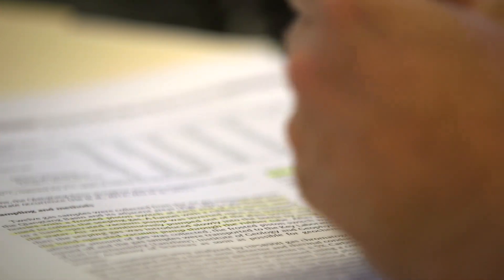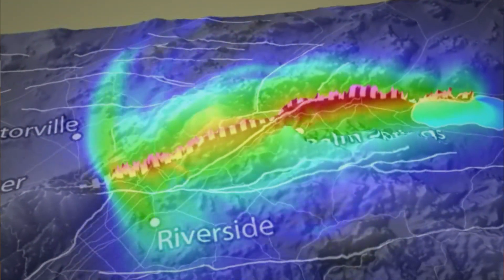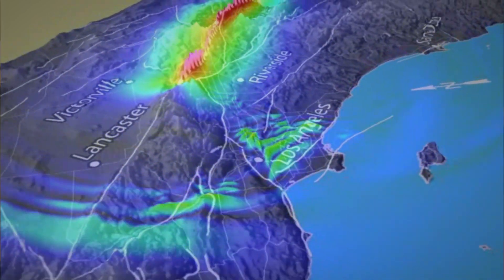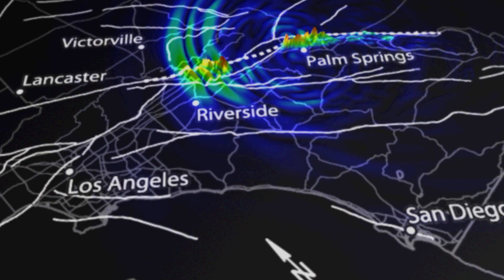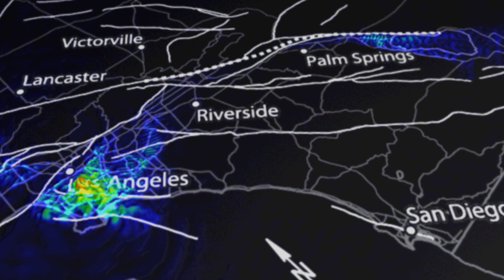What we did was develop a new approach, which we call the virtual earthquake approach. The virtual earthquake approach uses what we call the ambient seismic field — the waves that are present in the Earth at all times. Those waves, even though they're billions of times weaker than earthquake waves, interact with the complex geologic structure of the crust in just the same way. It's a new way of testing these simulations, and that's the information we use to characterize the hazard.